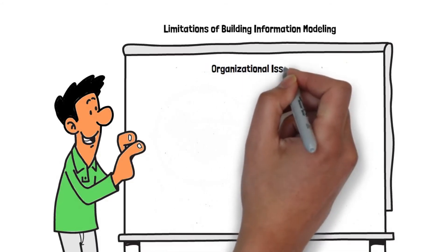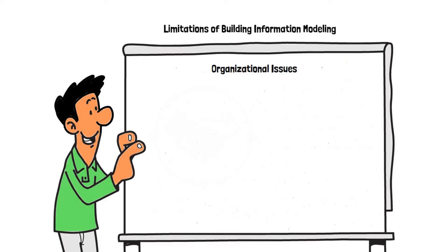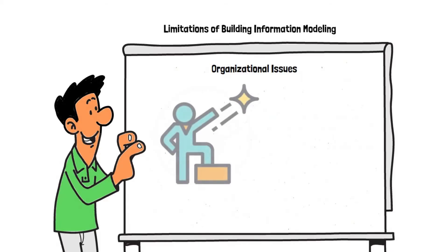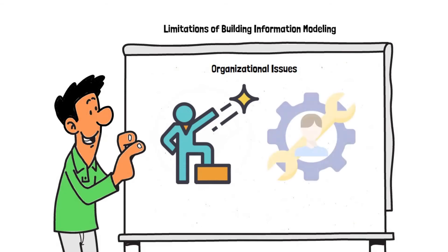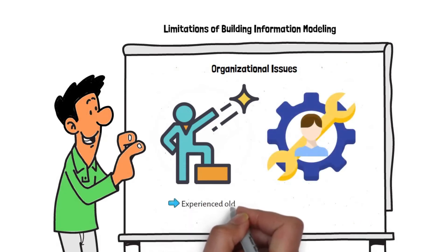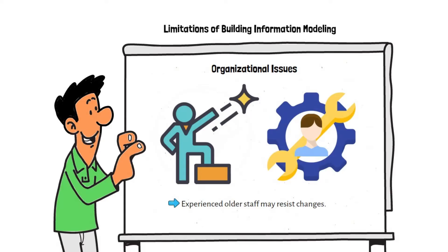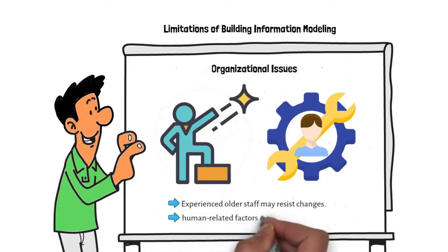Organizational Issues: The first step of BIM implementation starts with the willingness to change and effective leadership to overcome problems through the process. Technologically skilled staff is needed; however, experienced older staff may resist changes. In large-scale firms, human-related factors gain utmost importance.